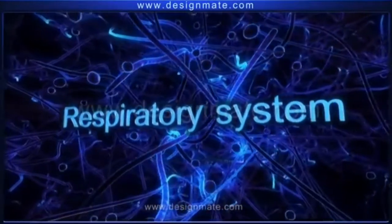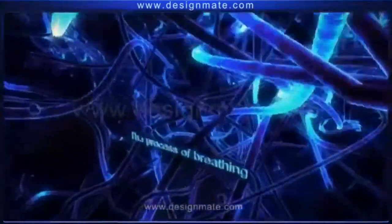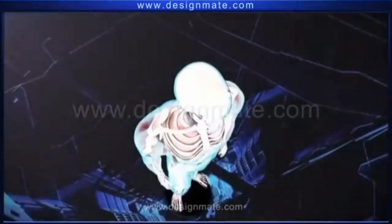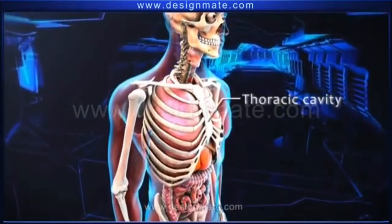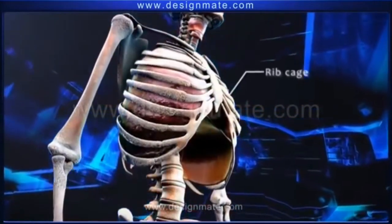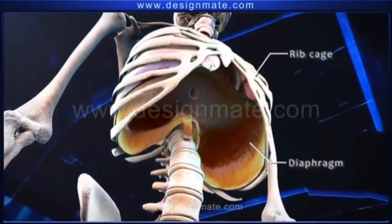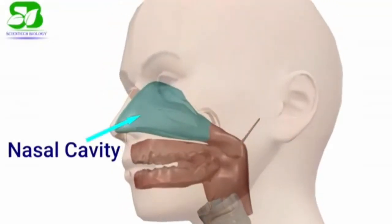If you have an oxygen system, you can use the respiratory system and respiratory organs. The mechanism involves the diaphragm. The respiratory organs are all located in the cell cavities.